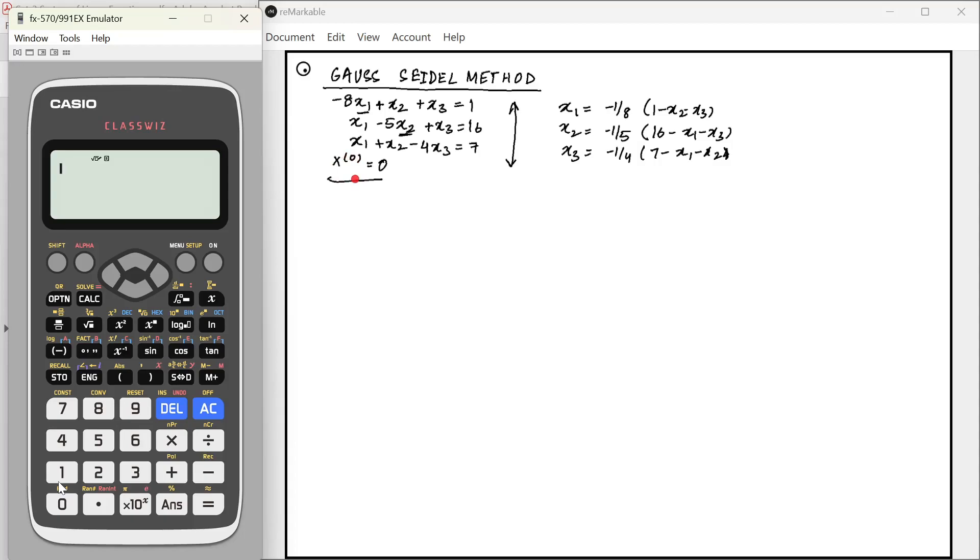Now, in the first iteration we assume all of them as 0. In the k plus 1th iteration, we can write x1 k+1 equals minus 1 by 8 times 1 minus x2 k minus x3 k, where these values are what we obtain from the previous iteration. x2 k+1 equals minus 1 by 5 times 16 minus x1.